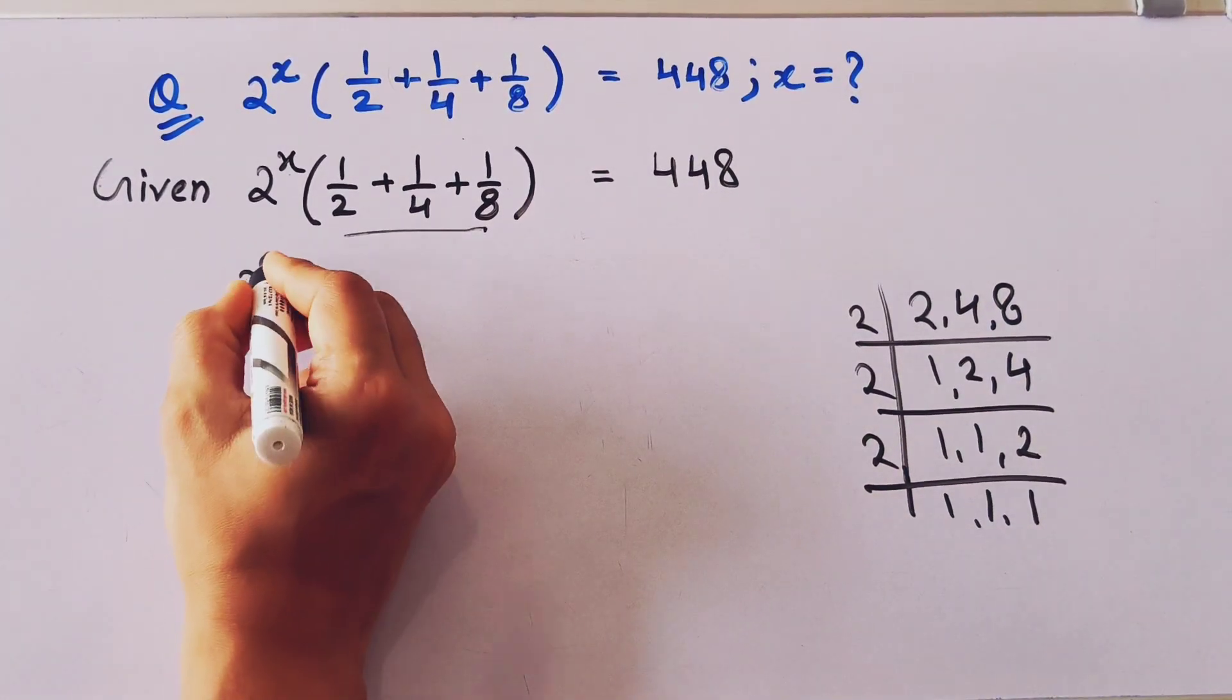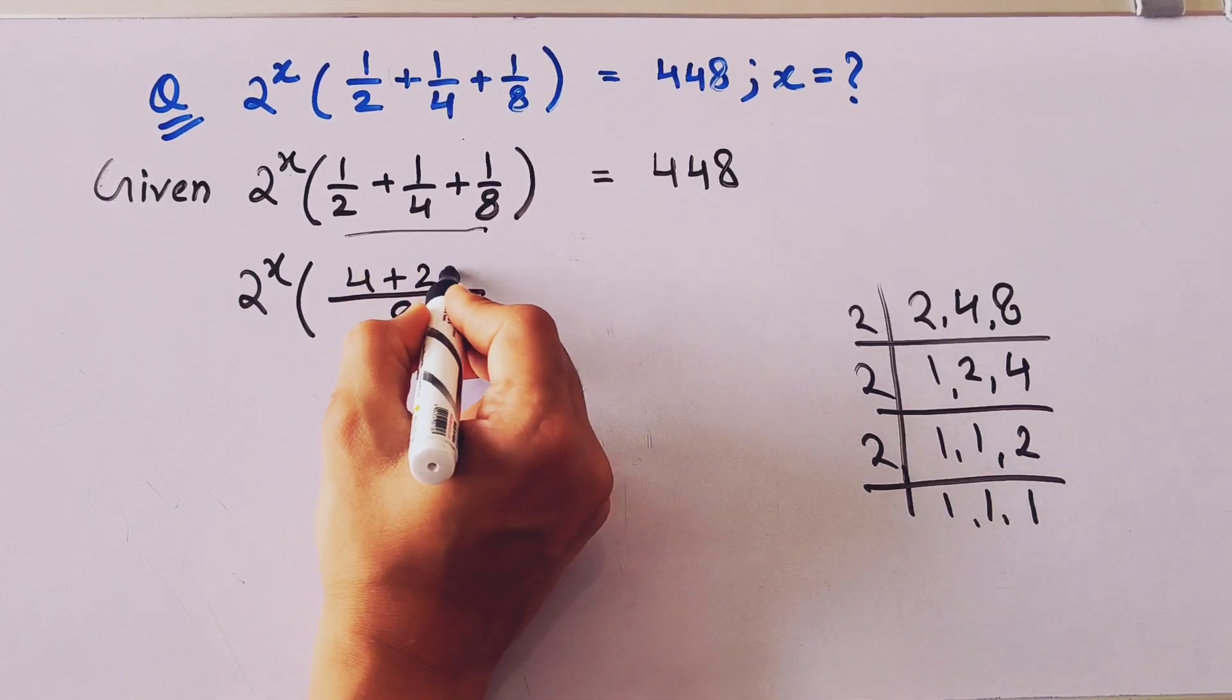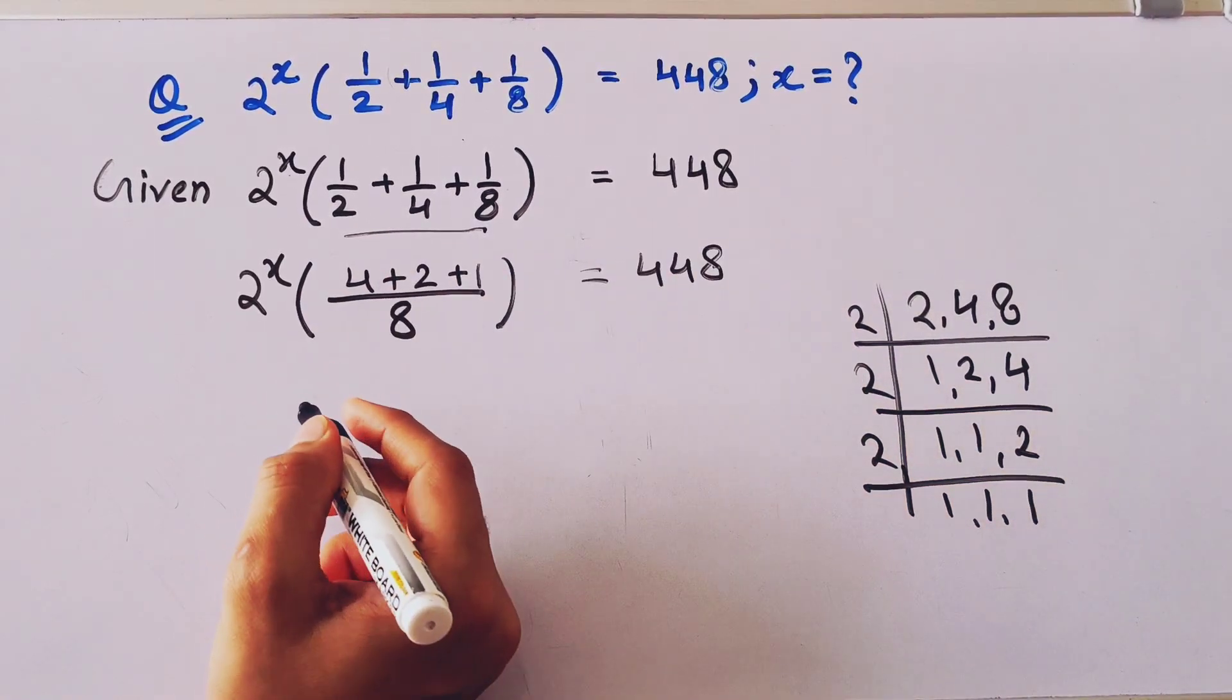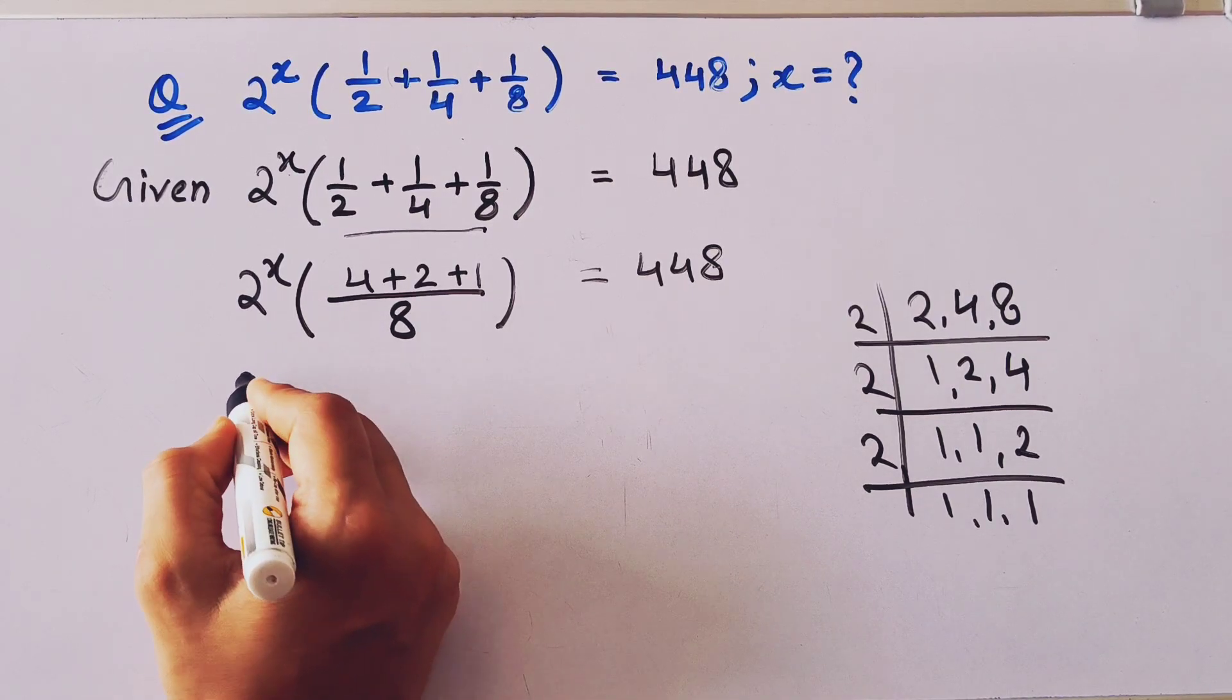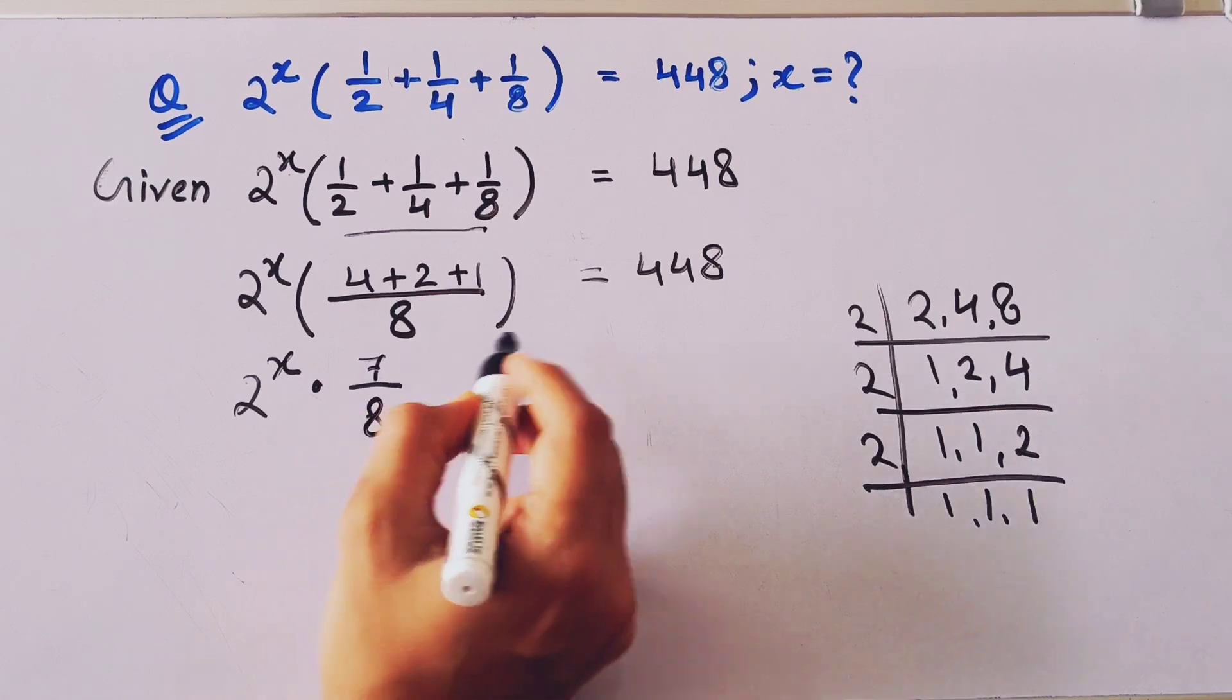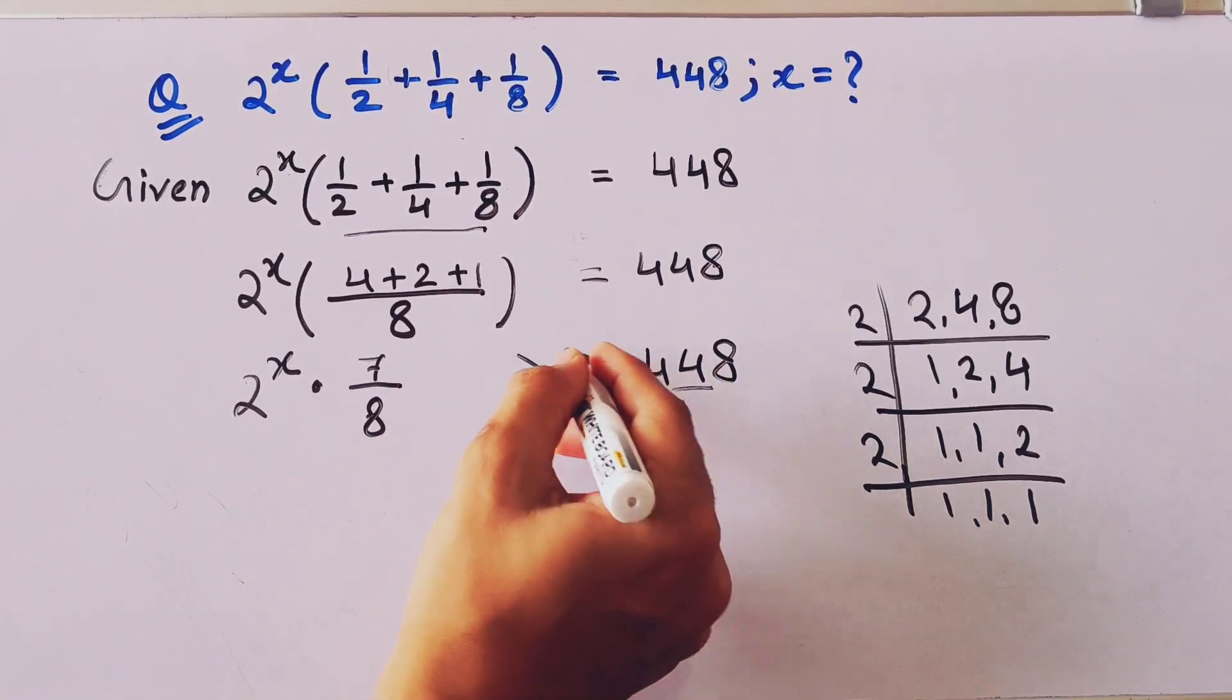Here one, two, two to the four, one, one, one. So over LCM is 8. Here 4 plus 2 plus 1. Now we'll open this bracket, so 2 to the power x and 7 divided by 8 equal to 448.